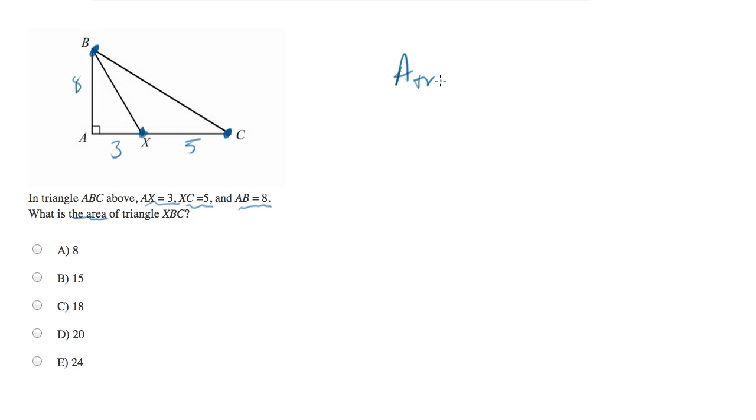Now, area of a triangle equals one-half base times height. Many people have this memorized. But you can still mess up on this problem, even knowing this formula, because you're not sure what the base and the height is.